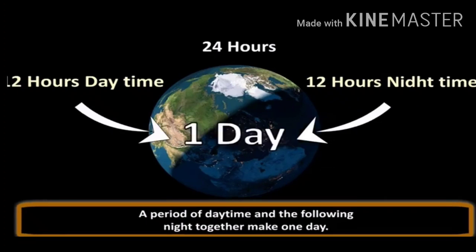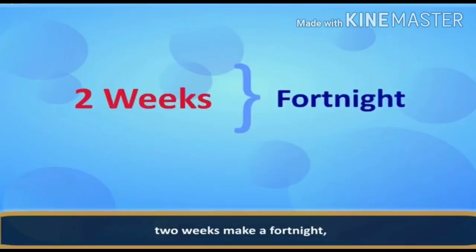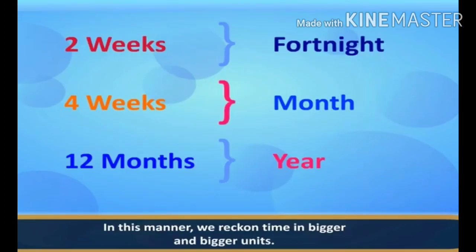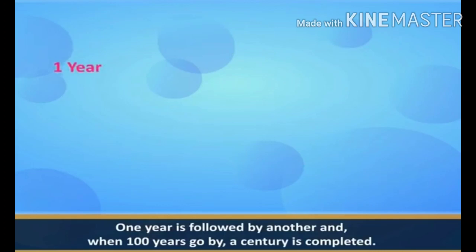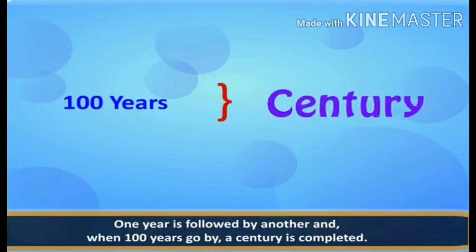7 days from Monday to Saturday make one week. 2 weeks make a fortnight. 4 weeks make a month. 12 months make a year. In this manner, we reckon time in bigger and bigger units. One year is followed by another, and when 100 years go by, a century is completed. When 1000 years are gone, a millennium is completed.